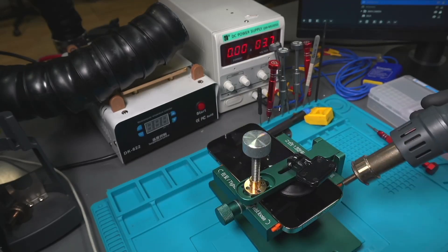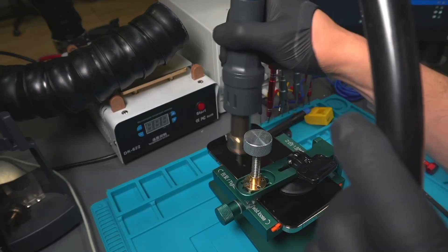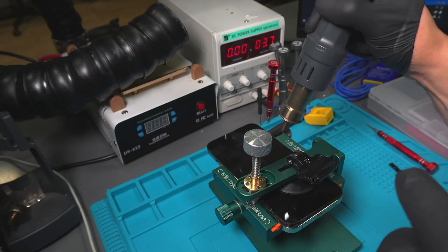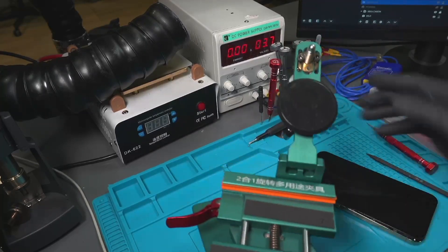What we will do first is use this machine to remove the phone's screen from the housing. With the suction cup and heat, we safely remove the screen without causing any damage.